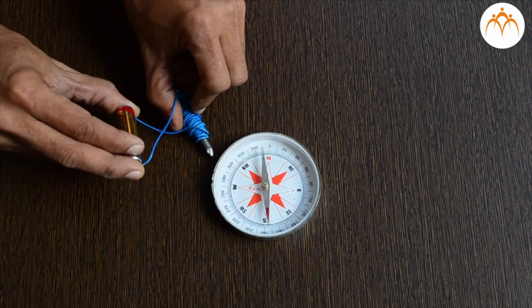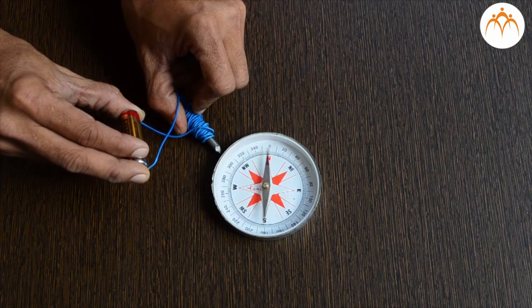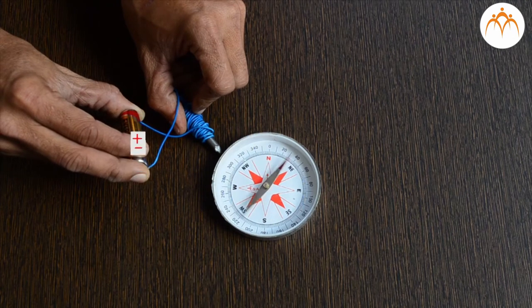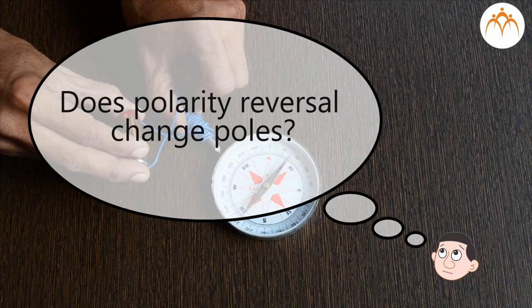One way to do it is to use our magnetic compass. Does reversing the current reverse the poles of that electromagnet?